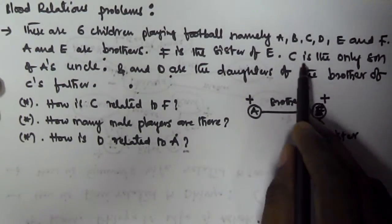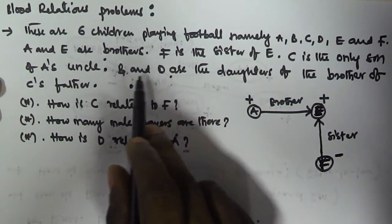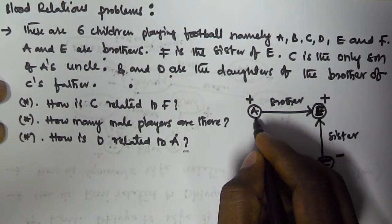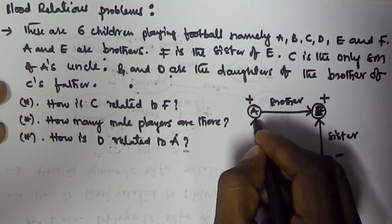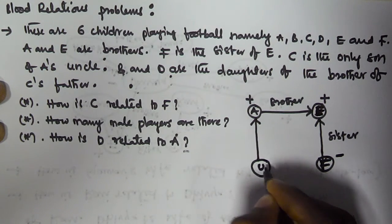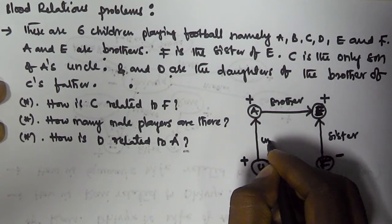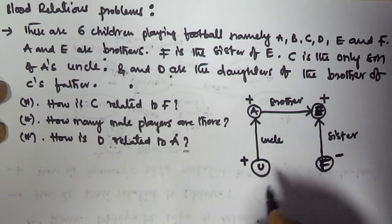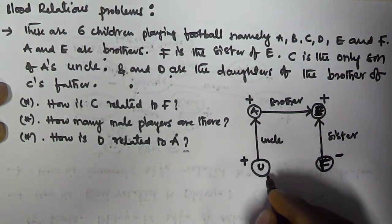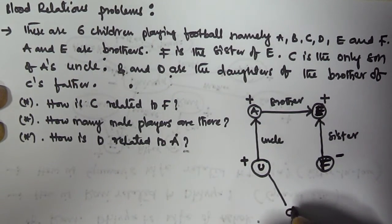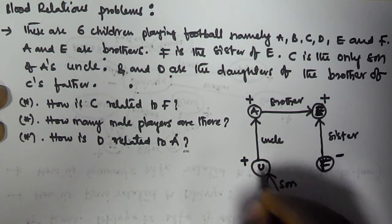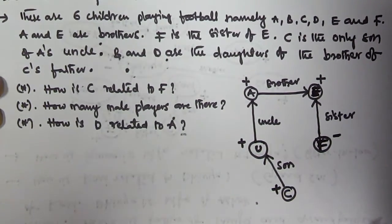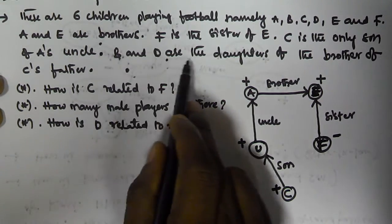C is the only son of A's uncle. We first need to define A's uncle — let's call him U. U is male, represented with a plus sign. U is the uncle of A, and C is the son of U, so C is also male, represented with a plus sign.